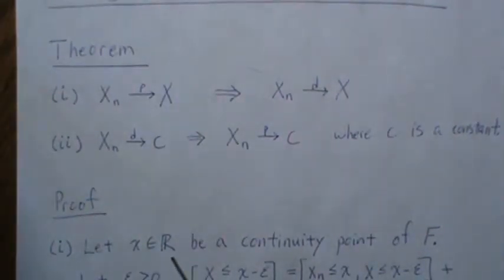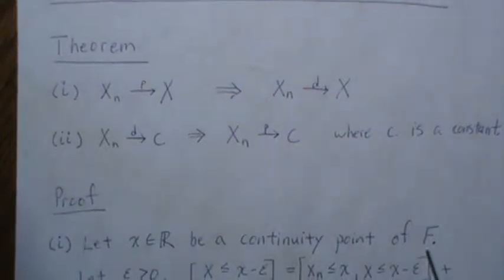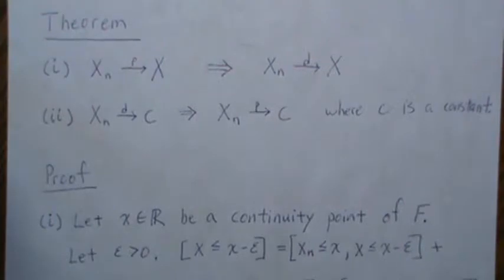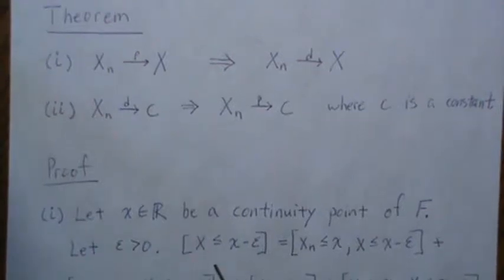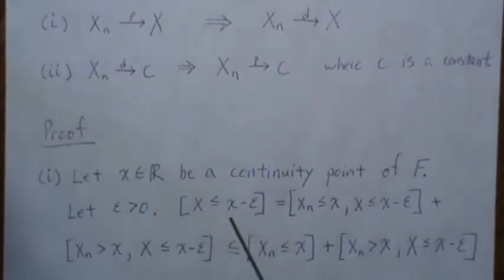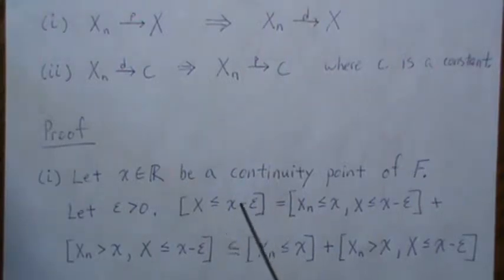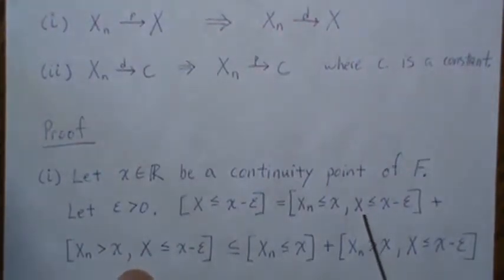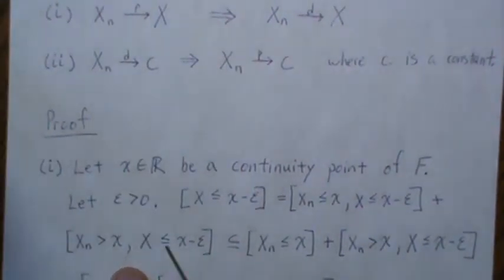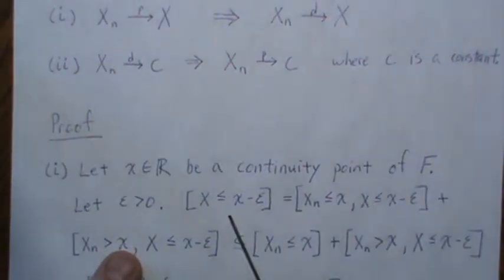Let X be a real number and be a continuity point of our distribution function F. So if epsilon is greater than zero and we look at this set X less than or equal to X minus epsilon, if we take the intersection of this with the set and then the intersection with its complement we get this back. So the union of these two sets, Xn minus X and Xn greater than X, we get this back.